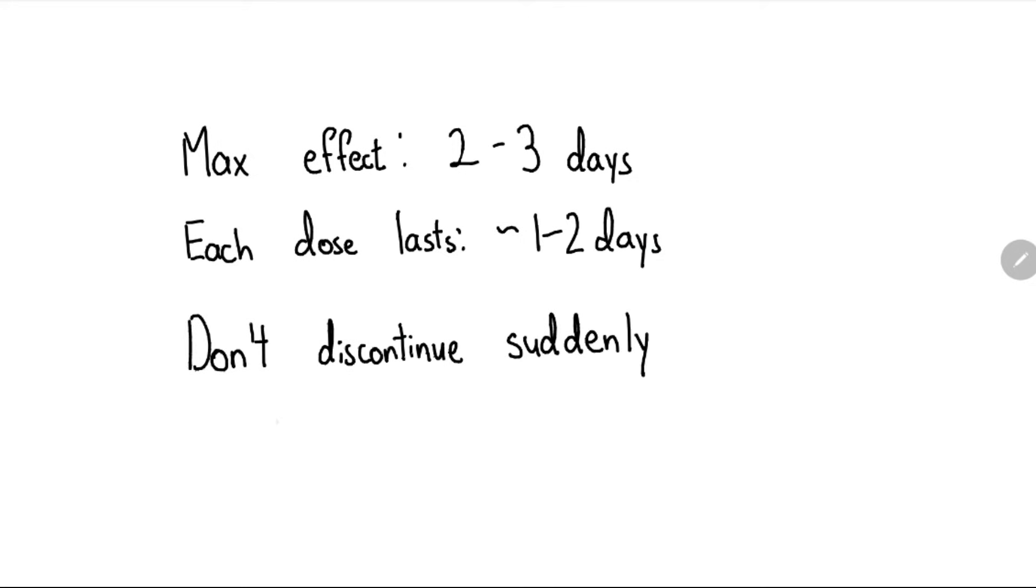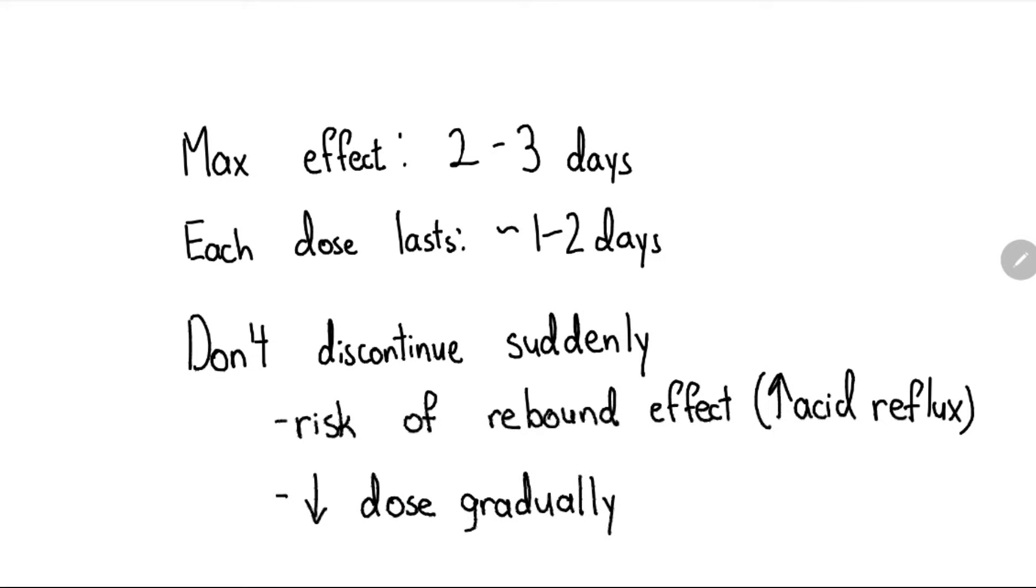PPIs take two to three days to reach maximum effect, and each dose lasts approximately one to two days. When discontinuing a PPI, it may be necessary to slowly reduce the dose, as sudden discontinuation may cause a rebound effect with overproduction of stomach acid, resulting in increased symptoms.